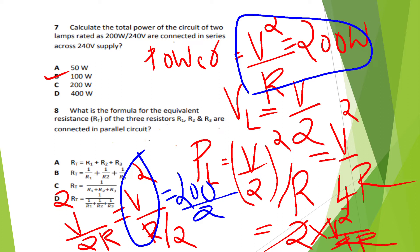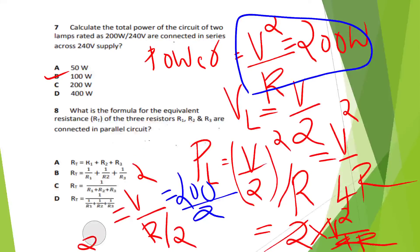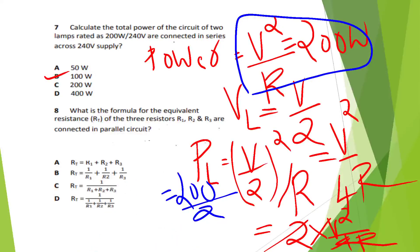Question 8: What is the formula for the equivalent resistance of three resistors R1, R2, and R3 connected in a parallel circuit? The answer is Option D: Rt = 1 / (1/R1 + 1/R2 + 1/R3).